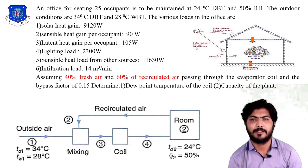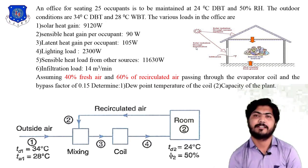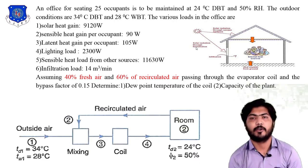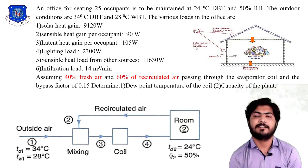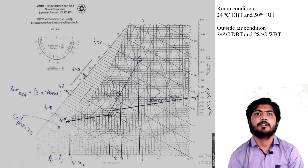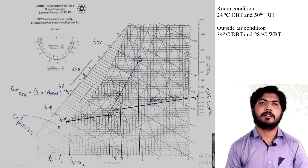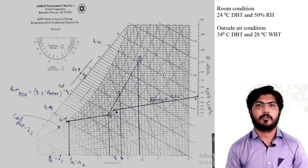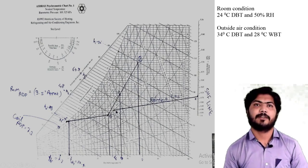For point 2, the dry bulb temperature is 24 degree centigrade — a vertical line — and relative humidity is 50%, which is a curve line. These two lines intersect at point 2 on the psychrometric chart. I am drawing the psychrometric chart: for point 1, the inclined wet bulb line at 30 degree centigrade and the vertical dry bulb line intersect at point 1. The enthalpy at point 1 is 90 kJ/kg. Point 2 is also located and confirmed.